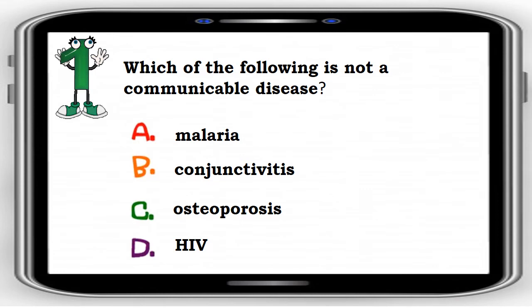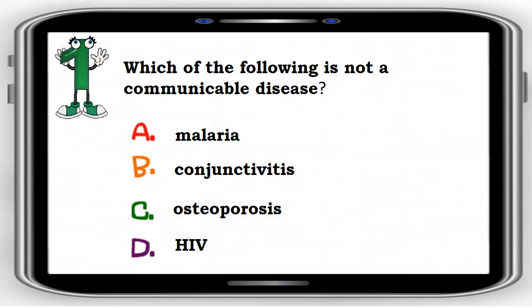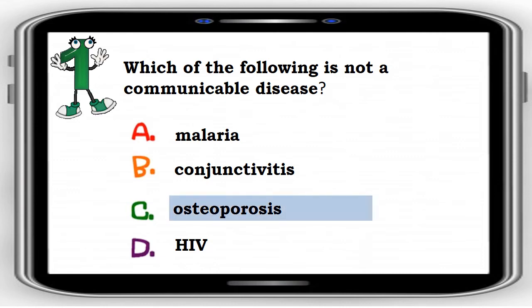Number 1. Which of the following is not a communicable disease? A. Malaria, B. Conjunctivitis, C. Osteoporosis, D. HIV. The correct answer is letter C. Osteoporosis.